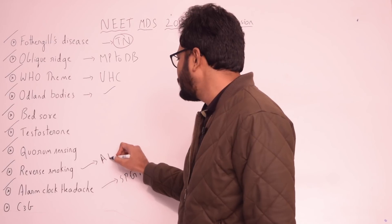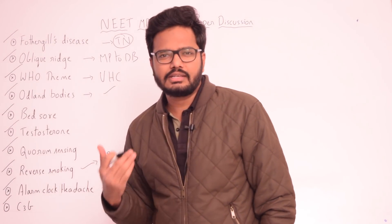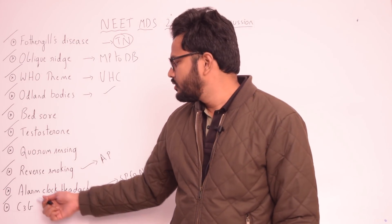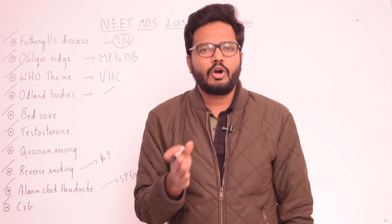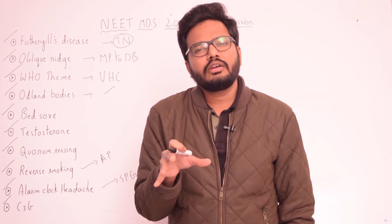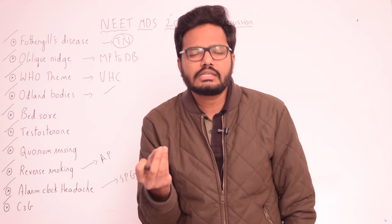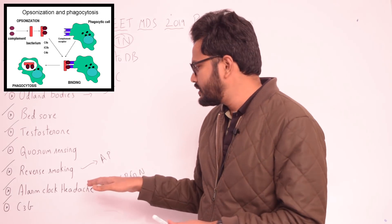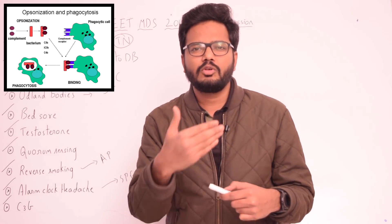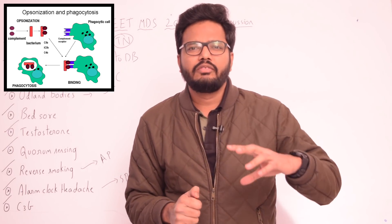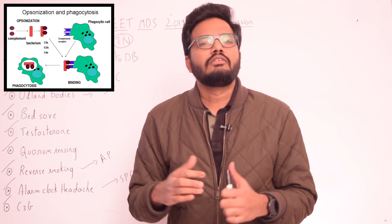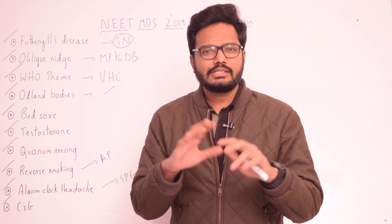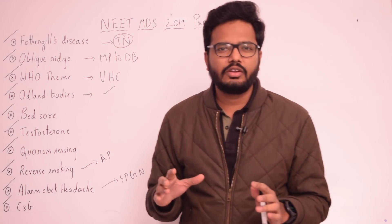Finally, C3b: we have discussed this many times in our e-classes, test series, and study club discussions. C3b is the largest component of complement 3 and is an important component of innate immunity. It is also a potent opsonin. Opsonization is a process of facilitating phagocytosis — C3b coats various immune complexes, foreign bodies, foreign cells, bacteria, and viruses, thereby facilitating phagocytosis. So C3b is a potent opsonin.